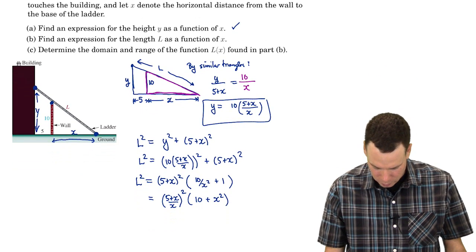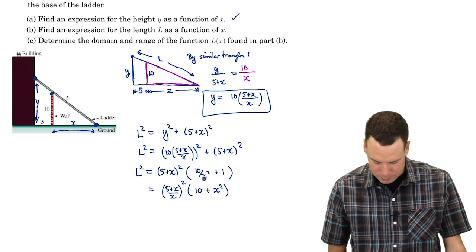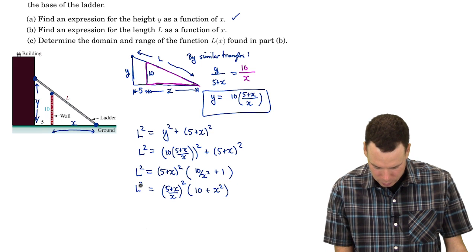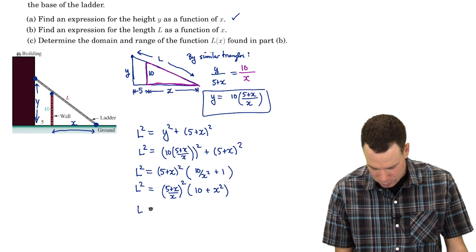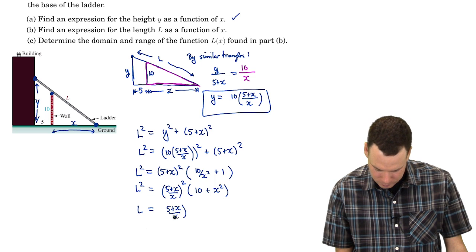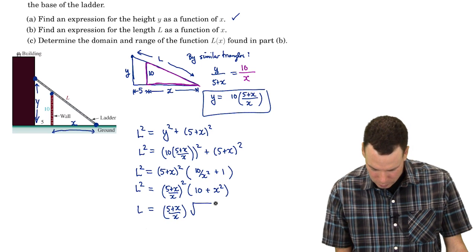So I factored out an X² from both terms over here and that's still L². Now I can take the square root. So that's (5 + X)/X times the square root of (10² + X²).